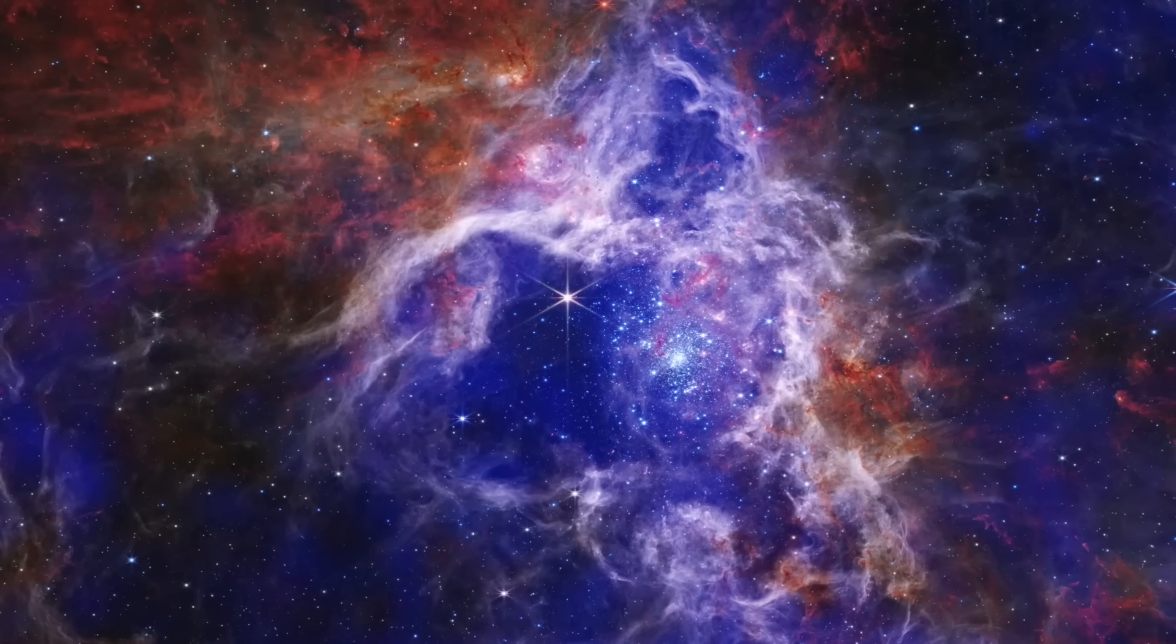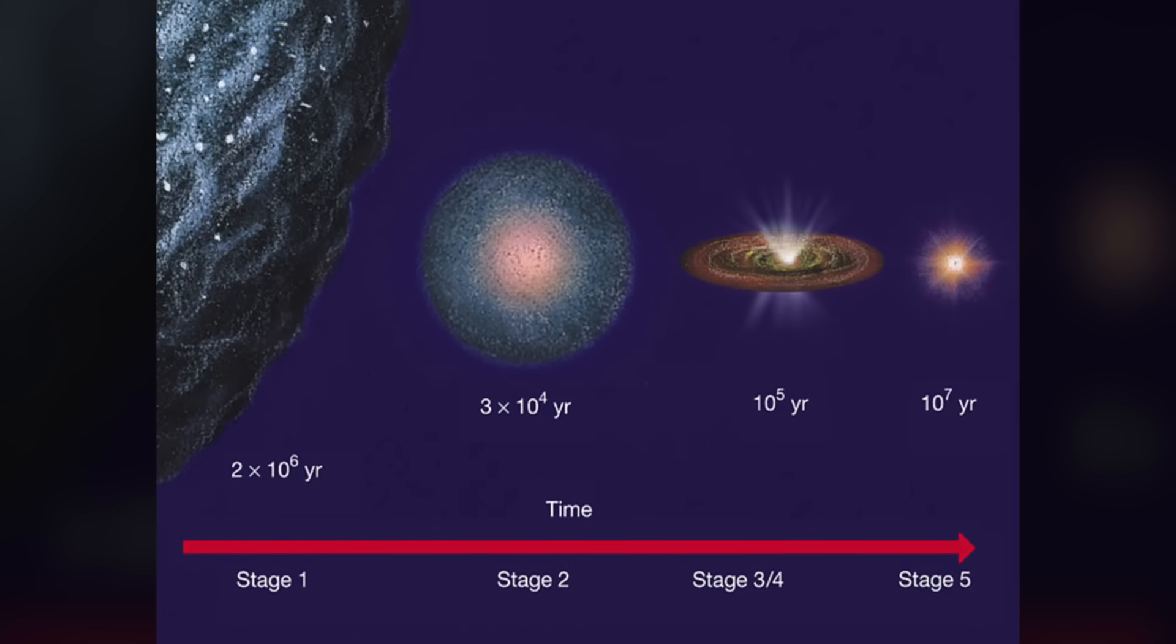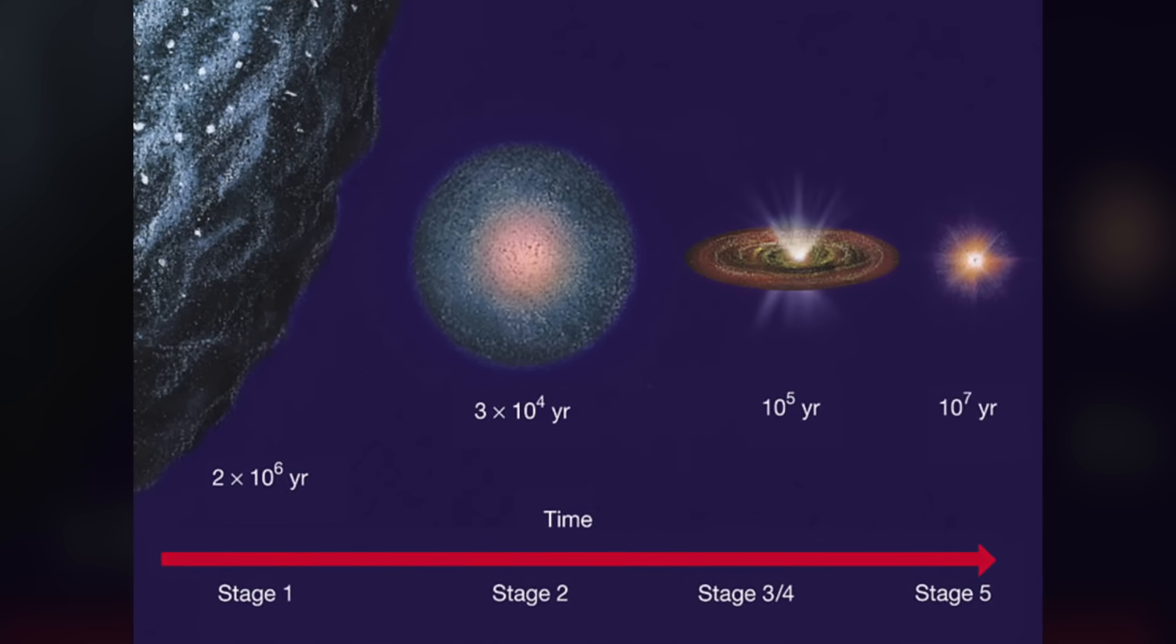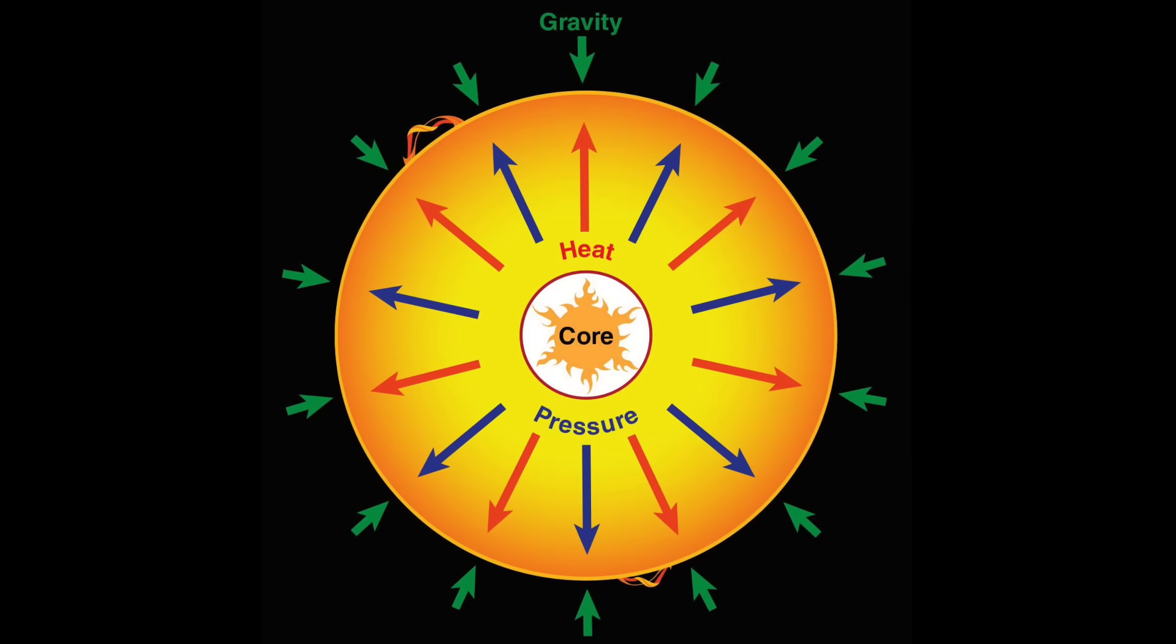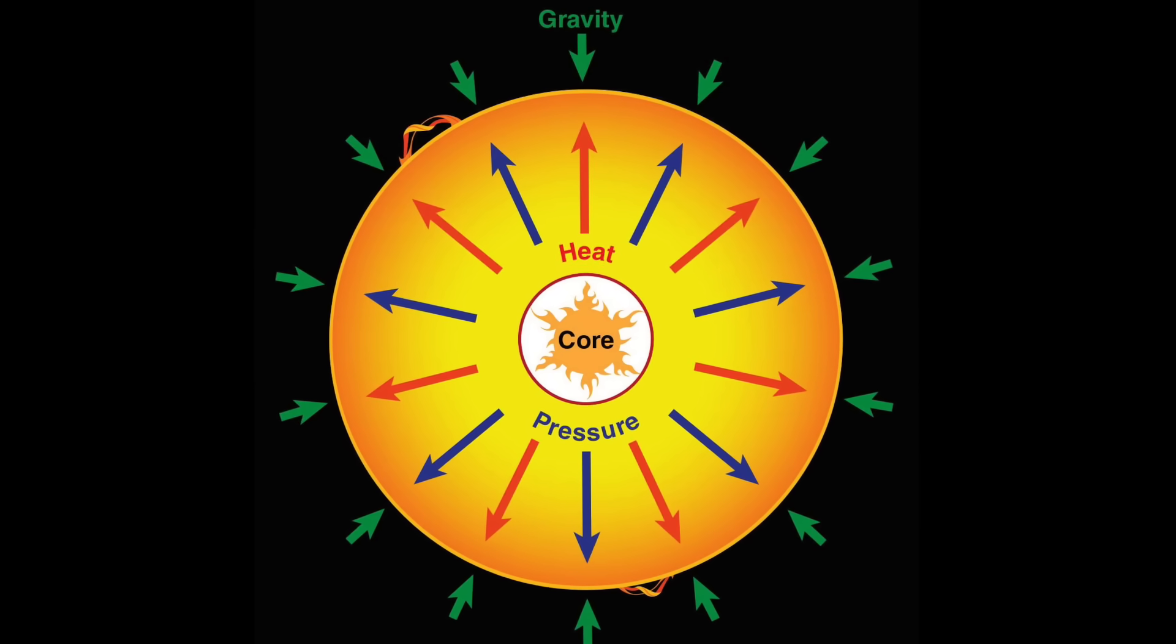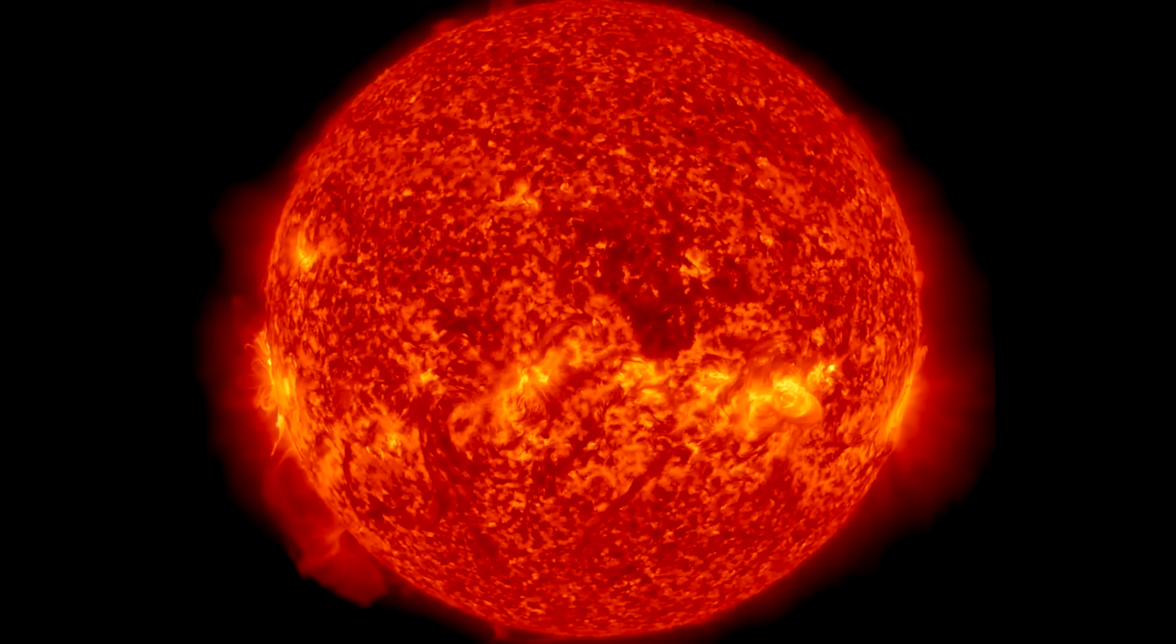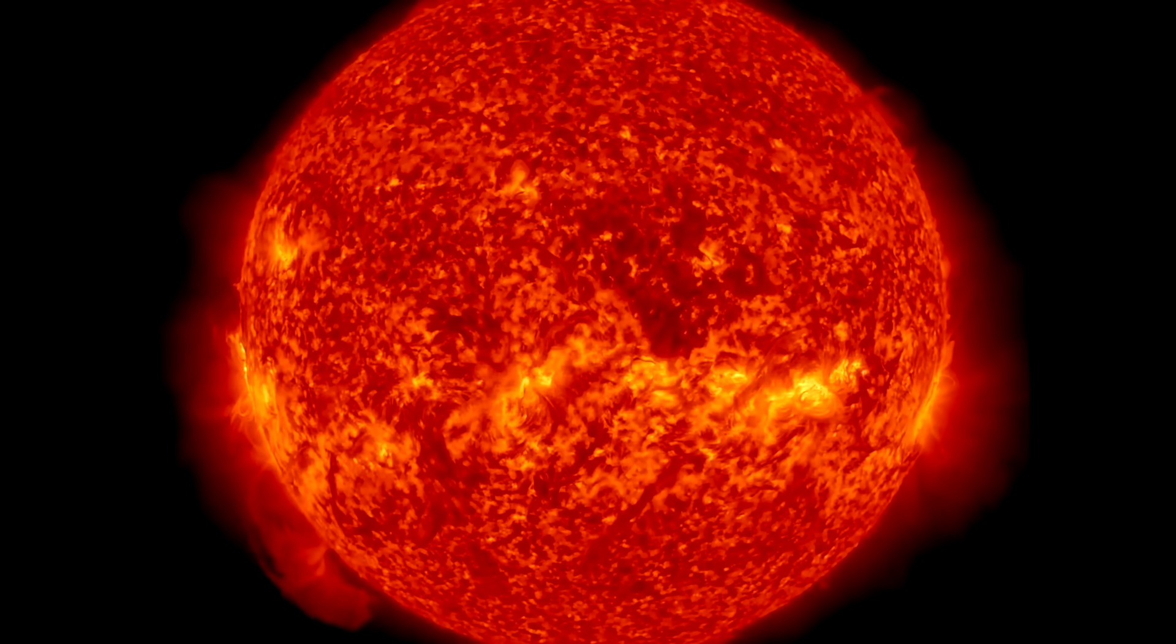We detect those clouds throughout the universe. And they must be collapsing because the law of gravity requires it. As they collapse, they heat up until the heat triggers nuclear reactions. Then the radiation pressure outward balances the gravitational pressure inward and a star is formed.